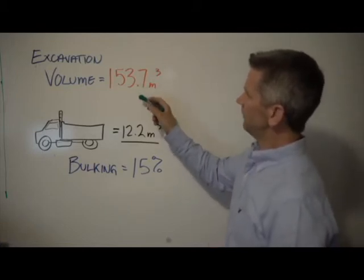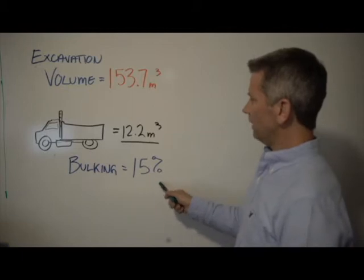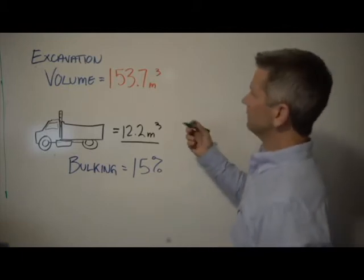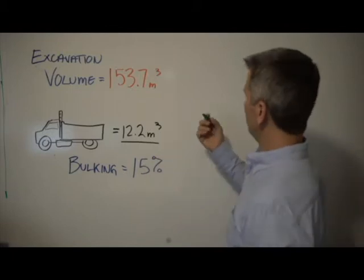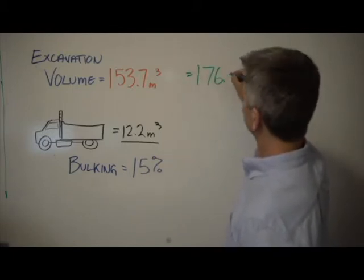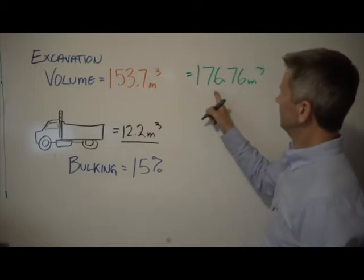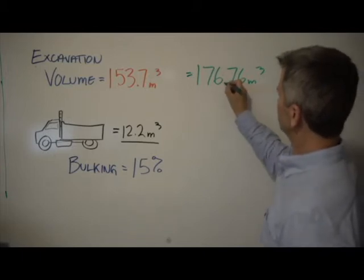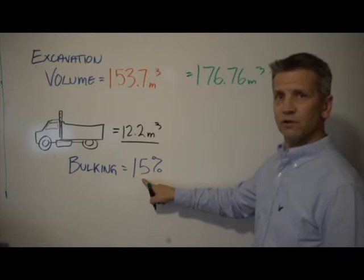So what we do is we take our excavation volume, we're going to multiply that by 1.15, and that will give us our total excavated volume including our bulking factor, and that'll be 176.76 cubic meters.